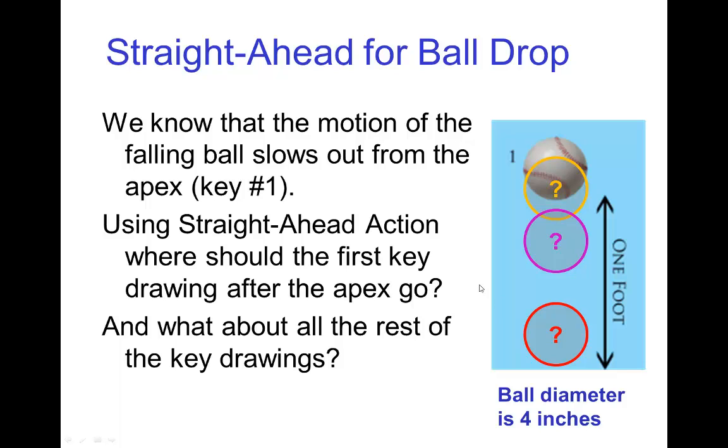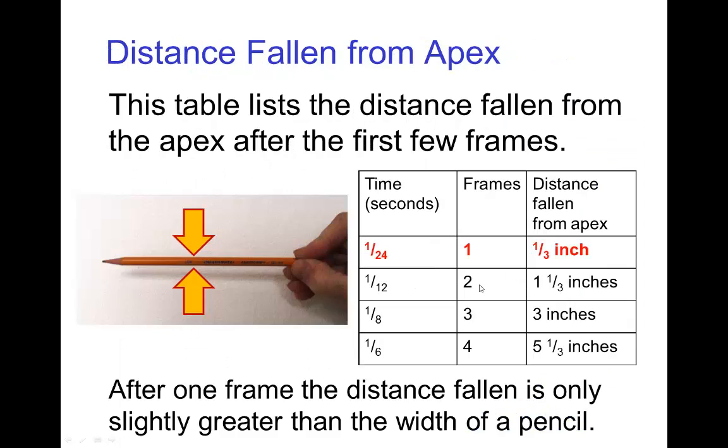How much time does it take for something to fall? In physics we can calculate these times given the acceleration of gravity. And here we have a table that shows after the first few frames how far something falls. From the apex after just one frame, the distance is very small. It's only about a third of an inch, which is a little bit larger than the width of a pencil.